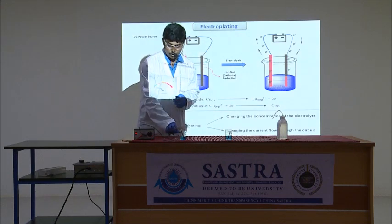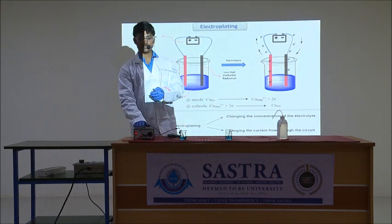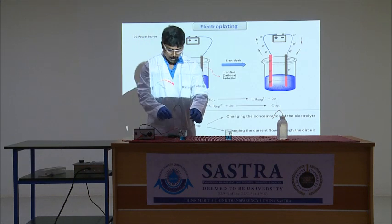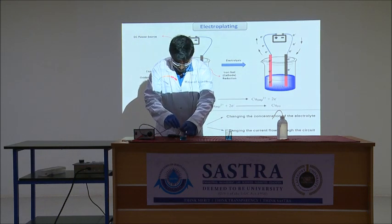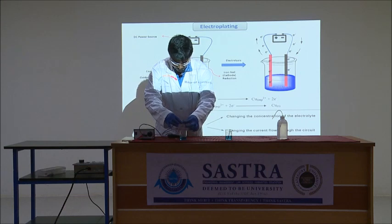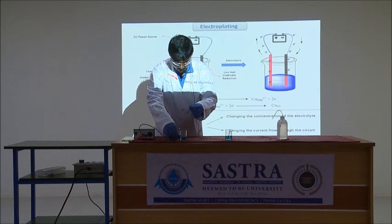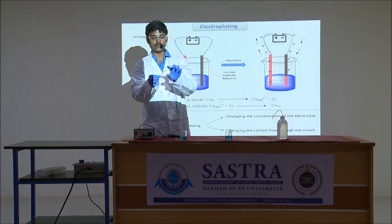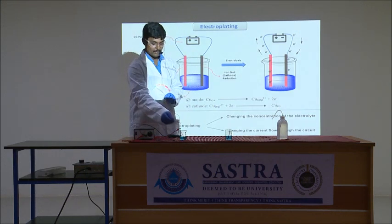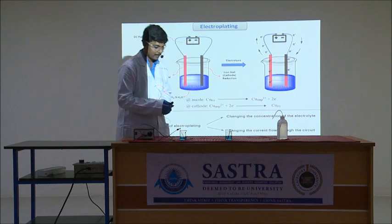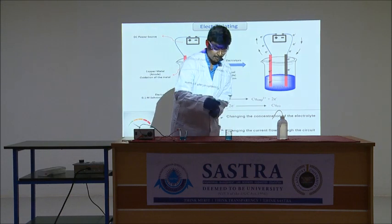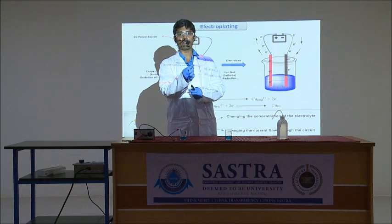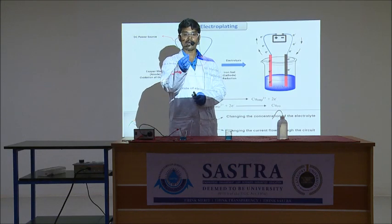Now we can stop the electrolysis process by switching off the power source. Taking out the electrodes, one can easily see the coating of copper on the surface of the iron nail. On the other hand, in the electroless process, we can also see the coating of copper on the surface of the iron nail.